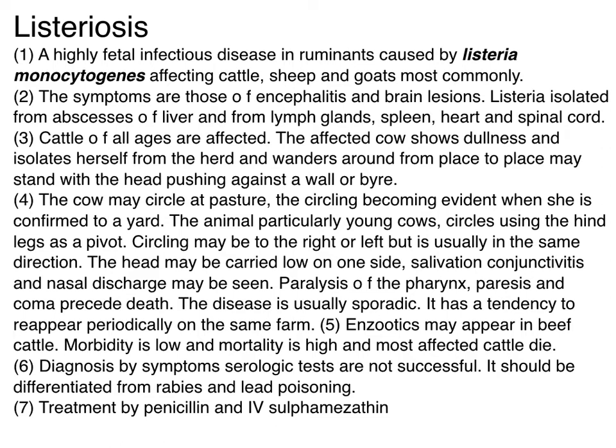Listeriosis is an important disease affecting animals caused by Listeria monocytogenes. The symptoms are those of encephalitis and brain lesion. Listeria is isolated from abscesses of the liver, lymph nodes, the heart, and spinal cord. In cattle, all ages are affected. The affected cow shows dullness and isolates herself from the herd; the cow may circle, and this circling becomes evident when confined to a yard. It should be differentiated from rabies and lead poisoning. Treatment is with penicillin and intravenous streptomycin.